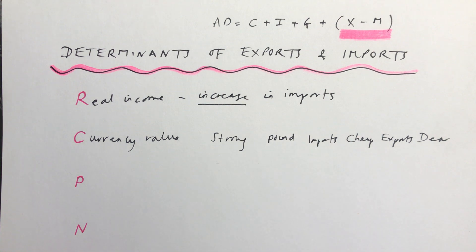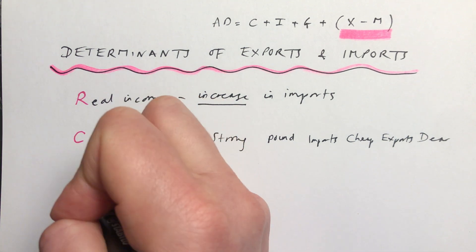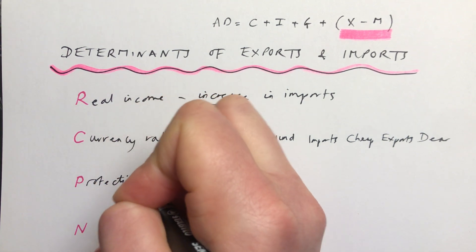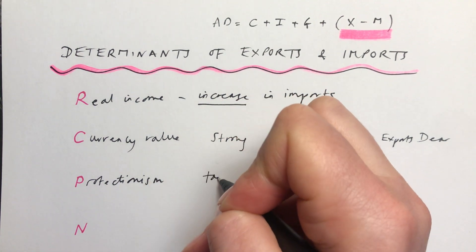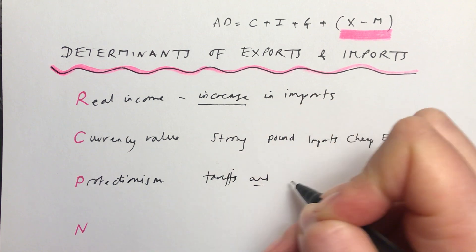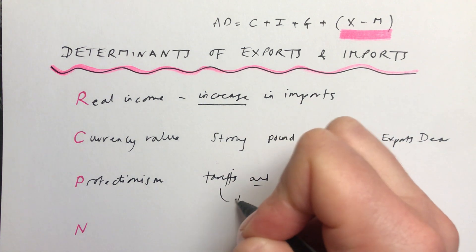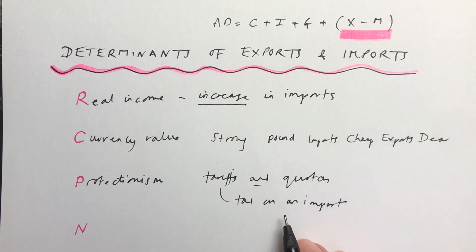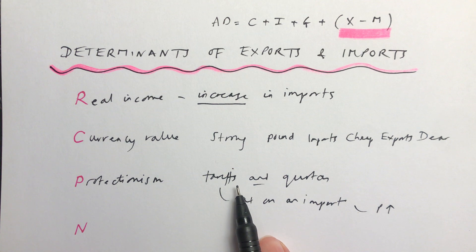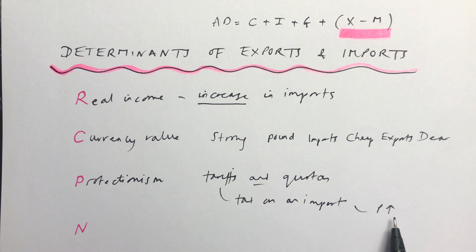The third one, P, is about protectionism. Protectionism is to do predominantly with tariffs and quotas. A tariff is like a tax on an import. If you put a tax on something, that causes the price of it to go up. So if we have tariffs on things coming into the UK, for example, that will make them more expensive, and then the demand for them would be lower.